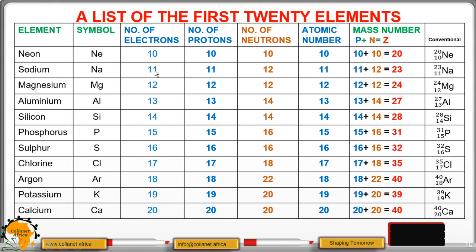Neon is the tenth element, sodium is 11, then magnesium, aluminium, silicon, phosphorus, sulfur, chlorine, argon, potassium, and calcium. The number of electrons is equal to the number of protons, the number of protons is the atomic number, and the mass number is the number of protons plus the number of neutrons. The mass number is usually the superscript before the symbol of an element, and the subscript is the atomic number, which is the same as the number of protons and also the number of electrons.